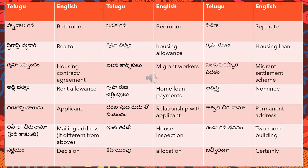'Gruha uppandav' means housing contract or housing agreement, usually made between a landlord and a tenant. 'Uppandav' refers to a contract or rental contract.